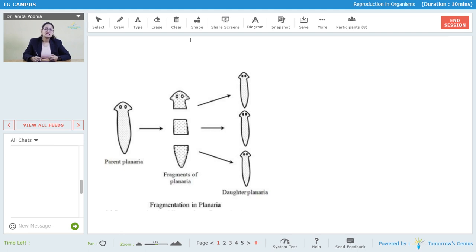In asexual reproduction, there are other specialized structures as well like zoospores, conidia, buds and gemmule which help in asexual reproduction.